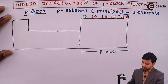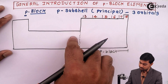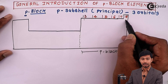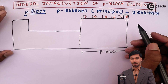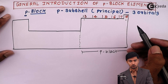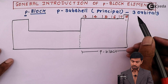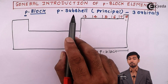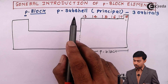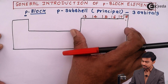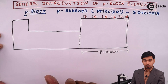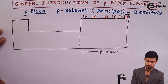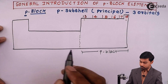The elements present in these groups — from group number 13 to group number 18 — show that the valence electron enters into the p-subshell. That is why they are referred to as p-block elements.